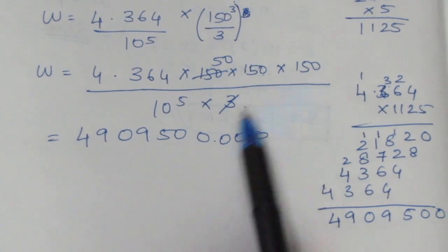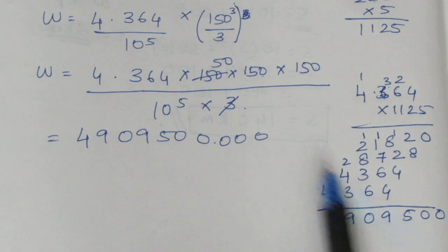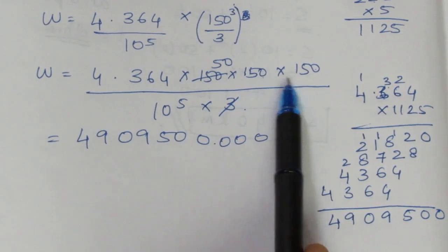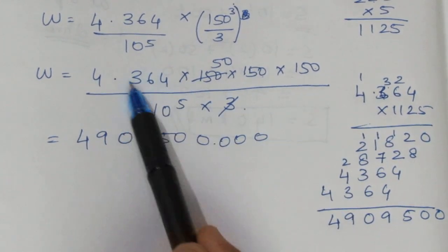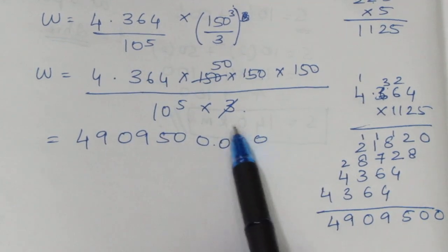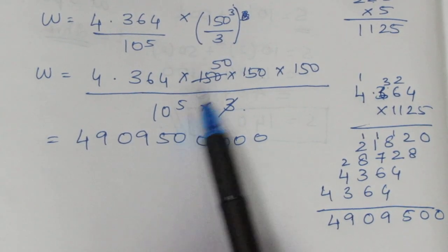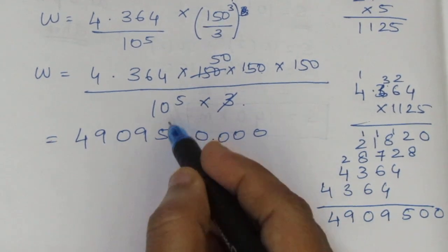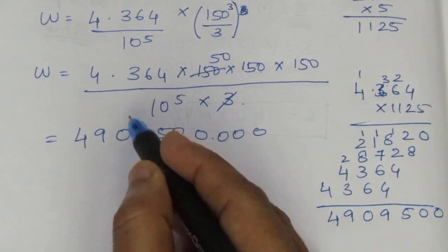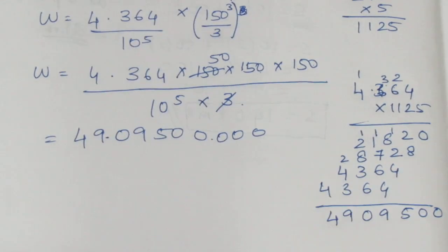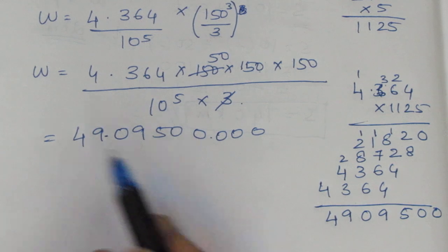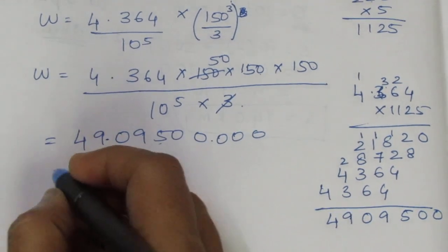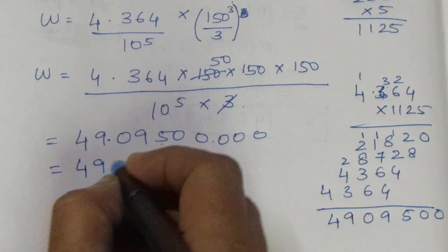After placing the decimal point correctly — there are 3 zeros from the cube and we divide by 10⁵, so we count 1, 2, 3, 4, 5 places — we get 49.095. Rounding off, that is approximately 49 kg.